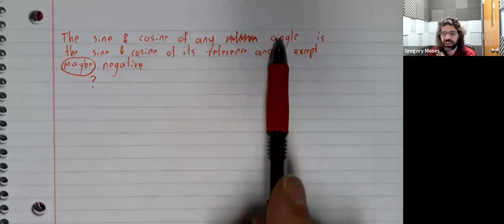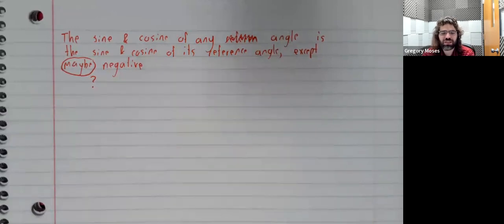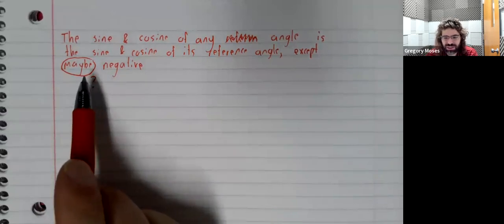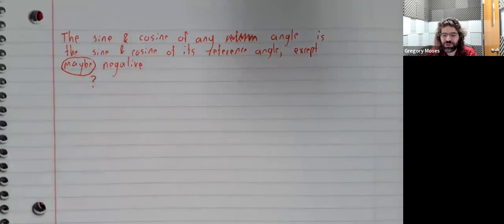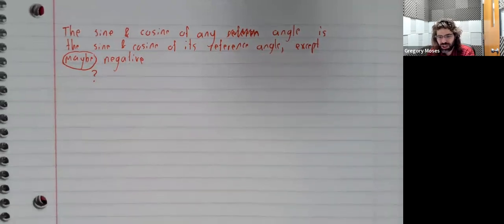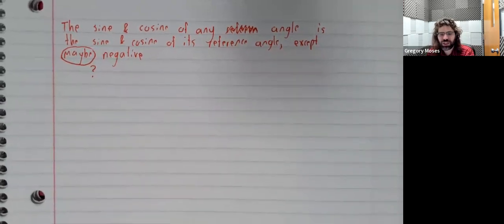That the sine and cosine of any angle is the sine and cosine of its reference angle, except maybe negative. And I put a question mark next to this because it's a kind of fuzzy statement. But let's see how this works in practice.